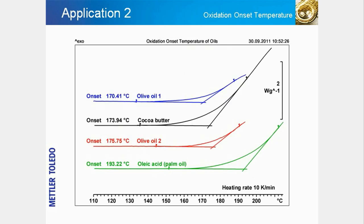The thermal and oxidative stability of materials is a very important quality characteristic because many materials decompose at higher temperatures and become unusable. Stabilizers are often added to counteract this effect. The thermal stability of a substance can be measured by using a purge gas that reacts with the sample — in most cases, oxygen. This slide shows an example of the determination of the oxidation-onset temperature (OOT) of different edible oils. The sample is placed in an open crucible with unrestricted access for oxygen gas, and the temperature is ramped at a constant rate until exothermal decomposition begins. The oxidation-onset temperature is evaluated as the onset in the measurement curve.